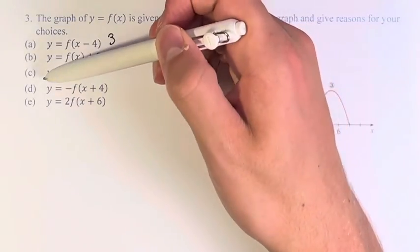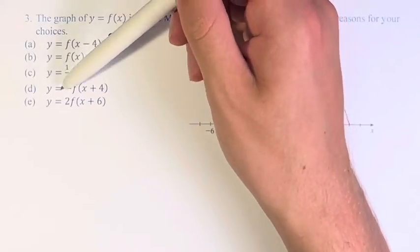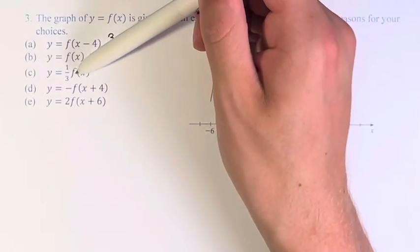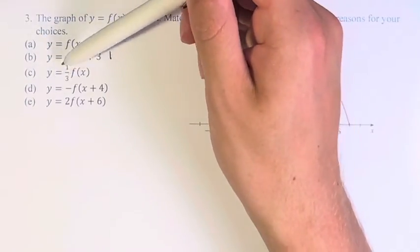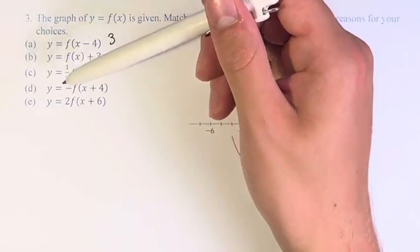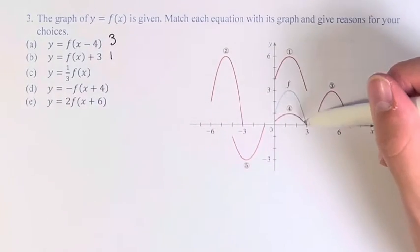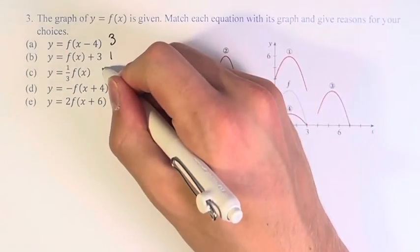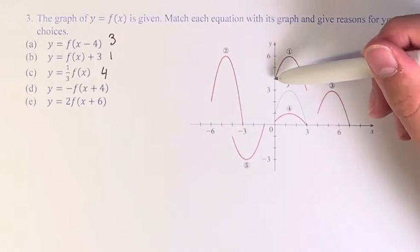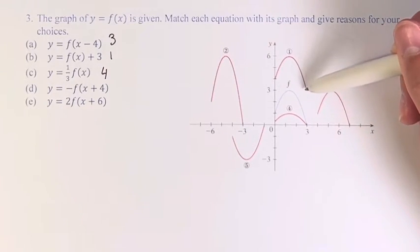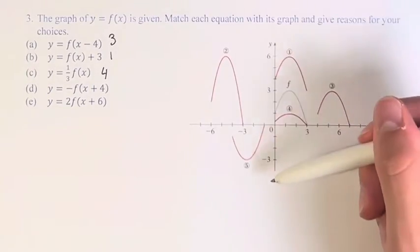Next, we have y is equal to 1 third f of x. This multiplication is done outside of the function. So this is a vertical shrink, because it's less than 1, by a factor of 3, vertically shrunk. We can see it matches with 4 right here. Notice that f and 1 have the exact same shape. 4 has a shallower shape, so that's how we know that it's being stretched and not just moved down.